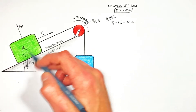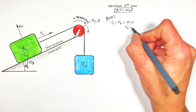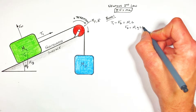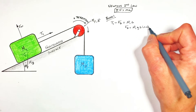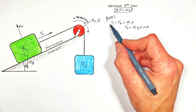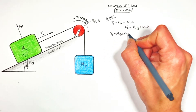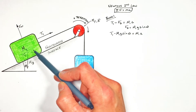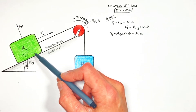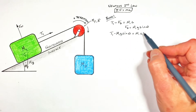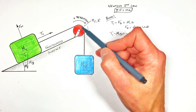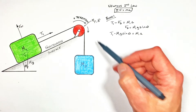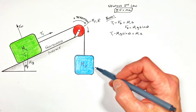We can expand out this FD term, because FD for a block on a hill is going to be Mg sin θ, where θ is the angle of the hill. Substituting that in, we get an expression relating the forces acting on this block to the actual acceleration. The issue is we don't know T1 and we don't know A, so we're going to have to look at the other objects in order to set up a system of equations to solve for both the tension and the acceleration.